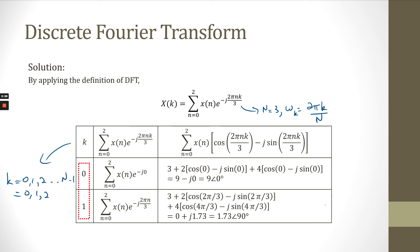We calculate the value of X[k] for k = 0, 1, and 2. For the exponent term e^{-jω_k n}, we convert into polar form using Euler's formula. The values of x[n] given in the question are: 3 for n=0, 2 for n=1, and 4 for n=2. First, we calculate for k equal to 0, summing over n=0, 1, and 2. We then convert the final value into polar form.